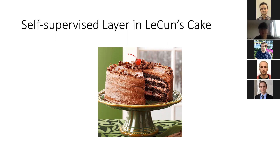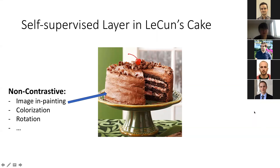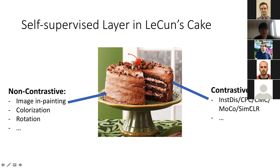In other words, the input data contains abundant information — why don't we just use the data itself to supervise the learning process? Previous self-supervised learning approaches can roughly be divided into non-contrastive approaches and contrastive approaches. For non-contrastive approaches, there are some neat ideas such as predicting image in-painting, colorization, or rotation degree of the image. Such ideas are neat, but they feel like random guesses within the methodology space with no clear connection between approaches.